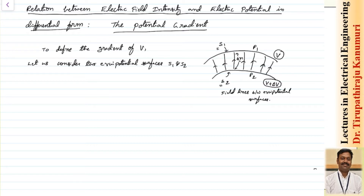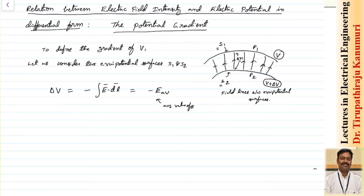If we want to calculate the potential difference, this delta V — because V is changed from V to V plus delta V — this can be obtained by taking the negative gradient of E dot dL, as we have already seen in previous classes. Let us assume the average value of electric field intensity is E_av. This E_av multiplied with delta N also gives us delta V. Let us take this as equation number 1. From this, delta V by delta N equals minus E_av — let us take that as equation number 2.